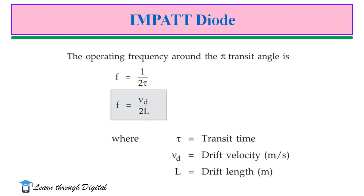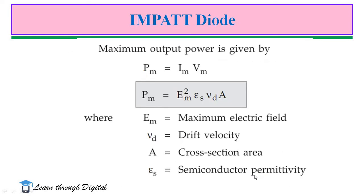This figure illustrates the variation of negative resistance with transit angle. The graph shows that maximum resistance is offered at theta equal to pi. Above pi radians, the resistance decreases rapidly. The operating frequency around the pi transit angle is f = 1/(2*tau), or equivalently f = Vd/(2L), where tau is the transit time, Vd is the drift velocity, and L is the drift length in meters.